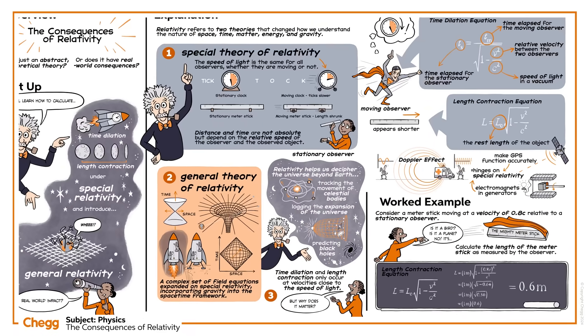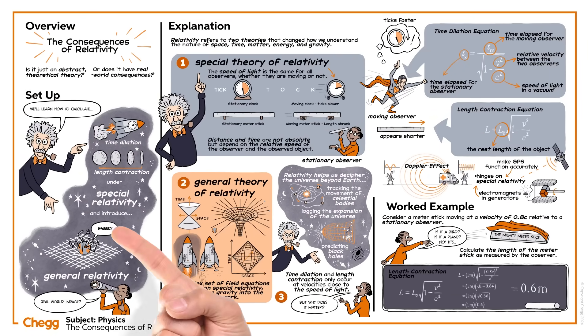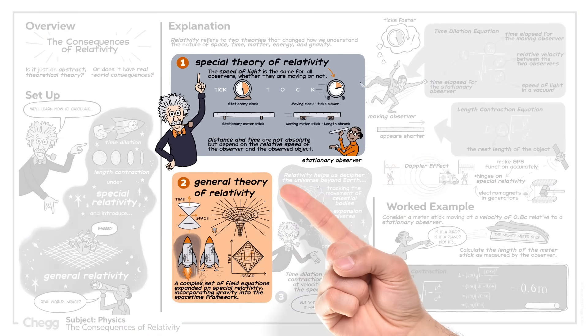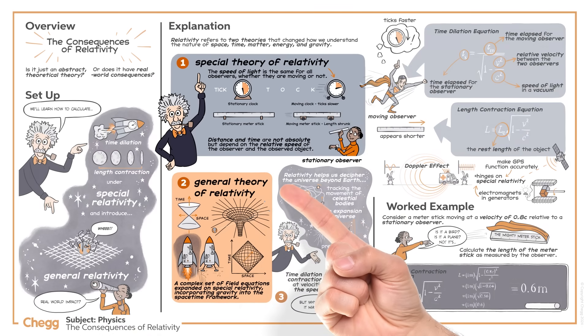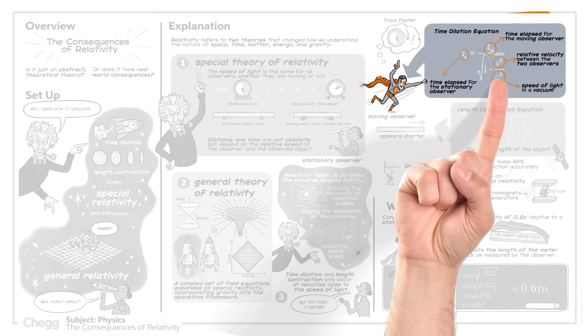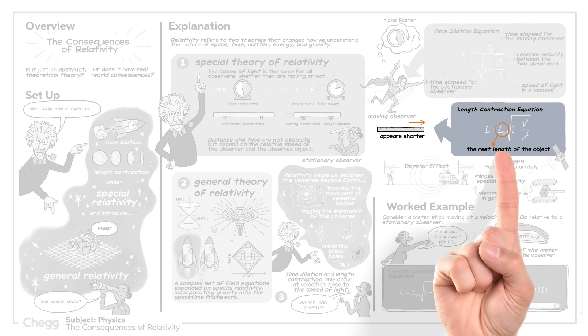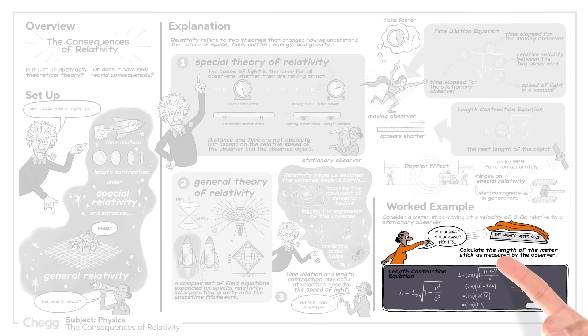In this lesson, we've learned about the two kinds of relativity, special and general. We learned how to calculate special relativity using the time dilation equation and the length contraction equation, and considered some real-world applications of Einstein's theories.